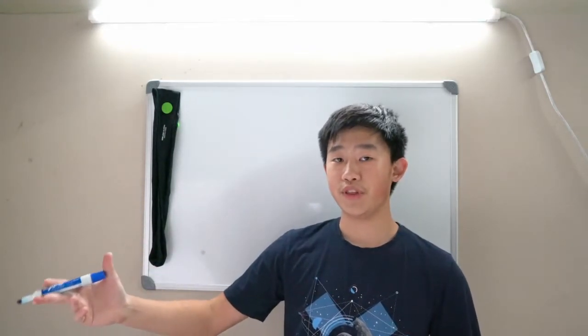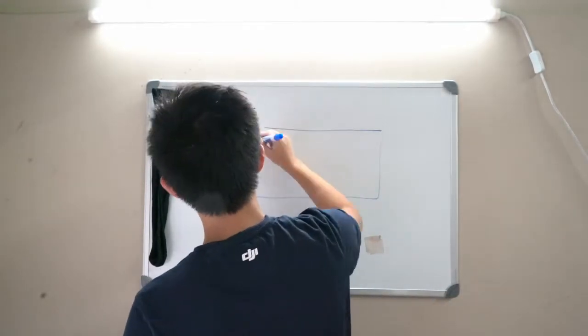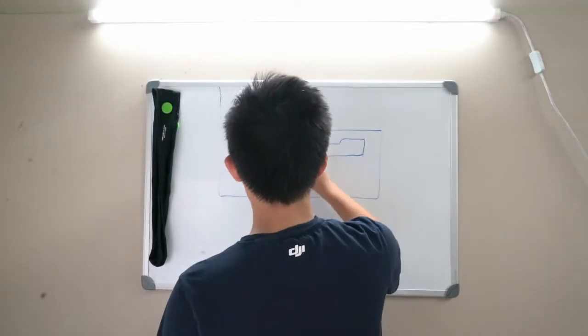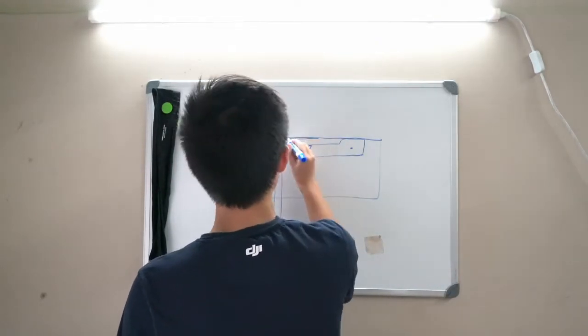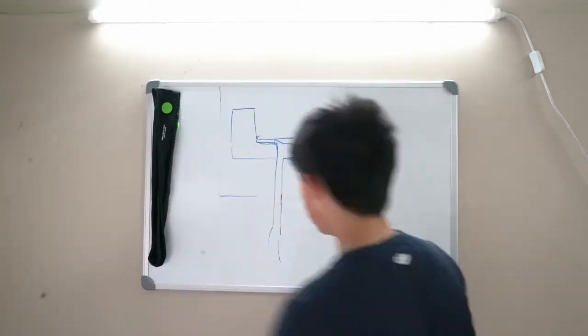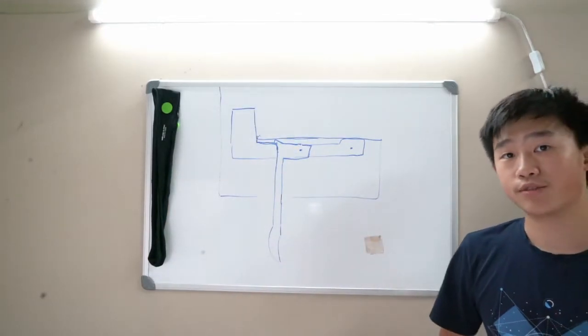So this first video is going to be explaining how the gun that I want to make works. And the first part we have to start off with is the trigger, also known as the trigger group or trigger assembly.